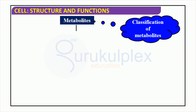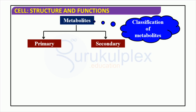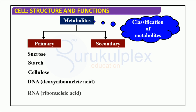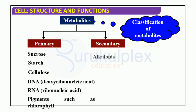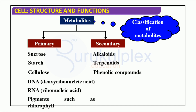Biomolecules are a necessity for all living organisms, consisting of primary and secondary metabolites such as DNA, cellulose, starch, sucrose, phenolic compounds, terpenoids, and alkaloids. Depending on their structure and chemical properties, metabolites provide a variety of functions for the organism. Getting to know how these metabolites interact with one another holds the key to comprehending the complicated cell network.